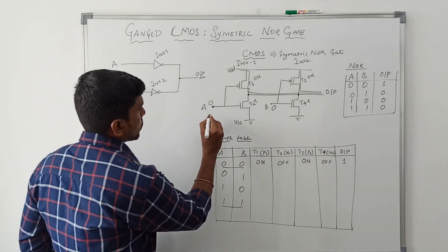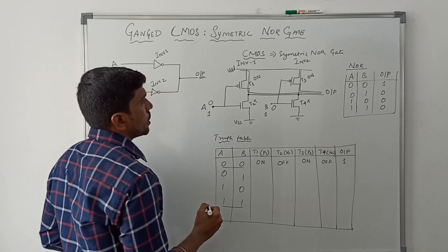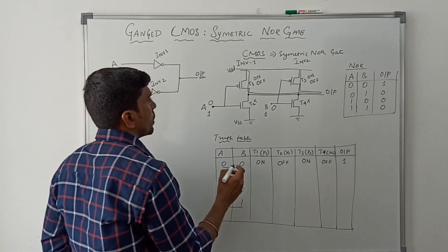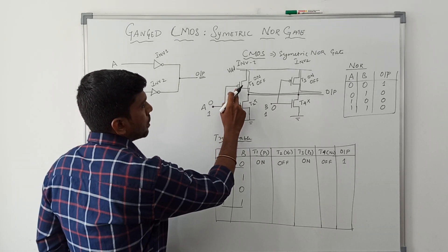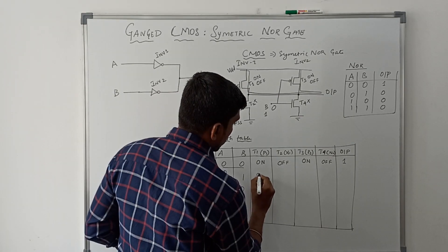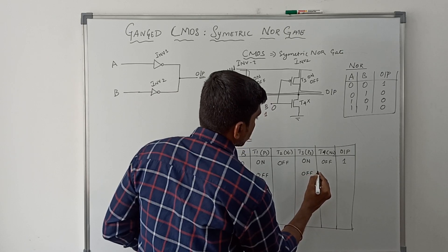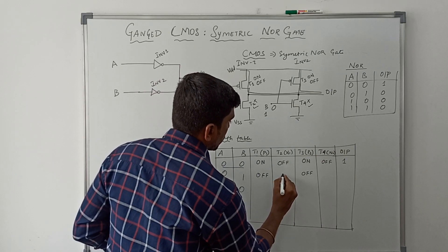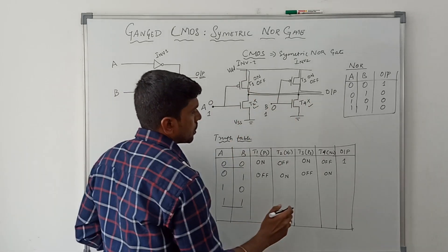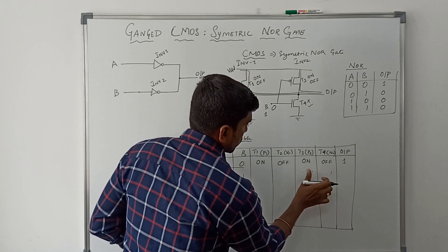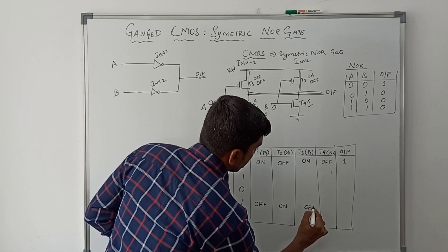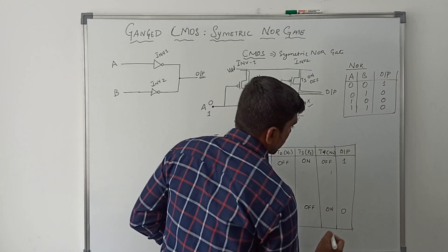Now taking input A=1, B=1: the two pull-up transistors go to off condition because the input value is one. After the bubble (inverter input) you get value zero. T1 is off, T3 is off. The remaining transistors T2 and T4 turn on. VDD is not connected to output. T1 off, T3 off, T2 on, T4 on — the final output of this circuit is zero.